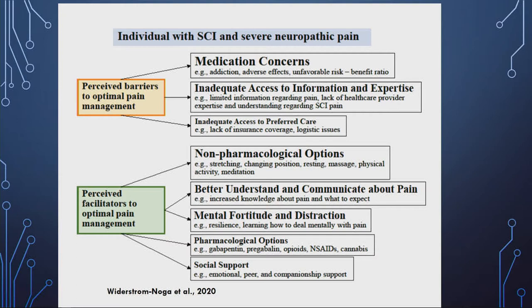There is a common concern that people don't feel they have access to preferred care. They feel insurance coverage does not cover many things they want, like non-pharmacological options. People do a lot themselves — they stretch, change positions, rest, and try all kinds of different things. Some people are very good at it, and some are even able to think away the pain, which is remarkable.